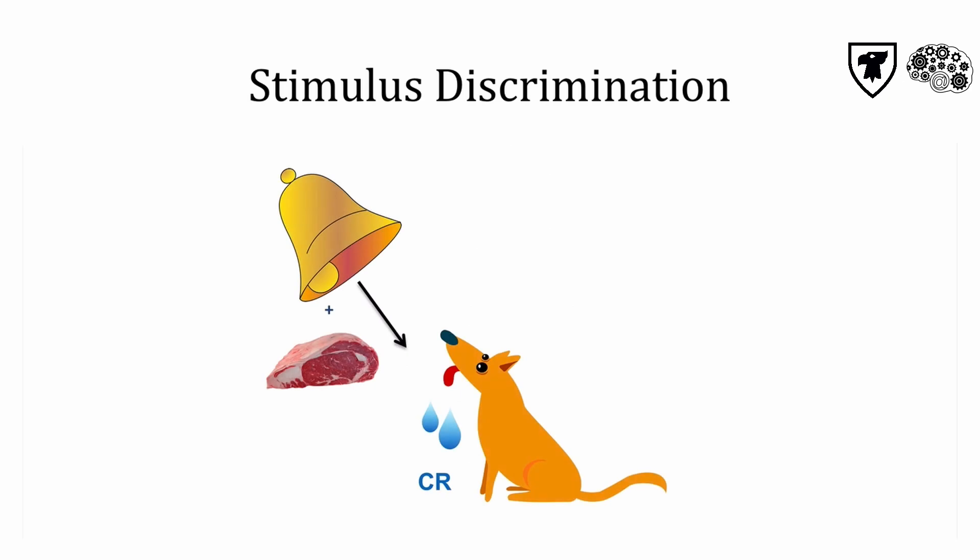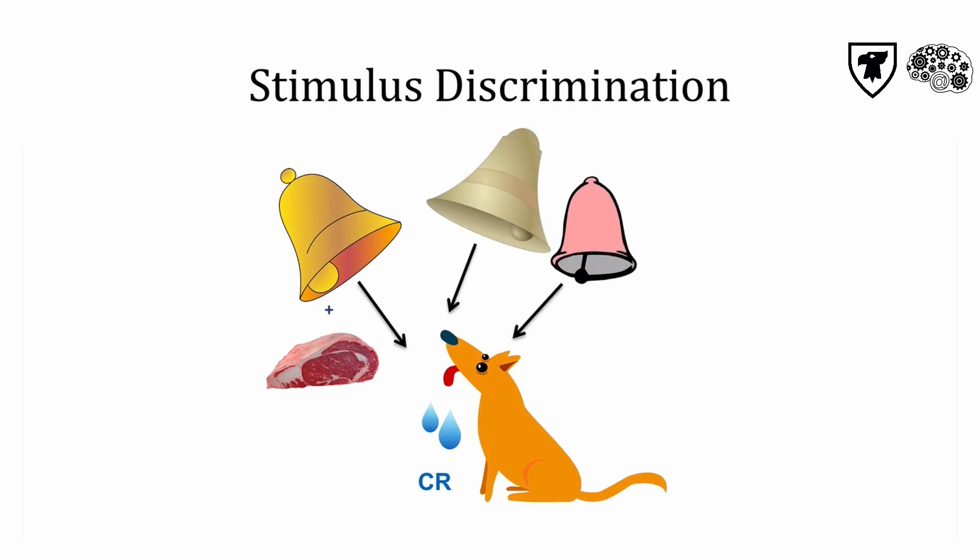Stimulus discrimination training tells us what individuals consider different, and it's the first step in training animals. Dogs are trained to communicate with us about smells they can detect, like drugs and explosives. Without any fancy technology — using just treats, patience, and knowledge of classical conditioning — dogs are able to tell us about dangers that are invisible to us.